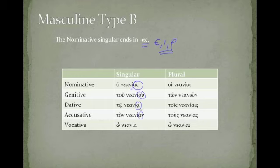So it looks, at that point, like a type B feminine. Hoi neaniai, tōn neaniōn, tois neaniais, tous neanias.